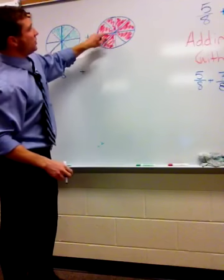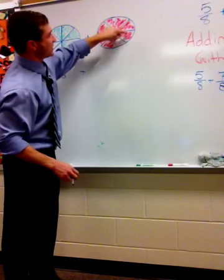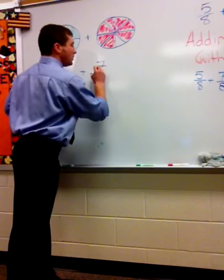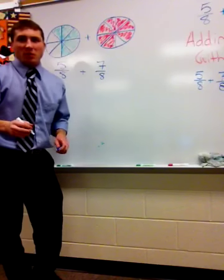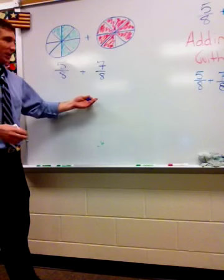Plus the second one has 1, 2, 3, 4, 5, 6, 7. The exact same problem: 5 eighths plus 7 eighths.